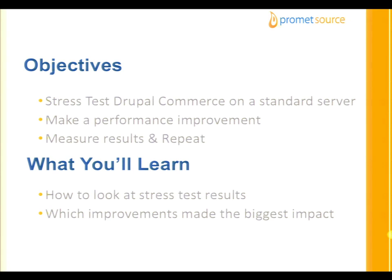Obviously that's not going to work for every case — every Drupal site is different with a different set of performance problems. We talked about generalities around things like Memcache and Varnish to see what kind of improvements they actually have on a typical setup. We stood up a site, stress tested it, built a script, looked at results, made an improvement, and repeated. What I'd like everyone to take away is how to look at stress test results and what improvements had the most impact.